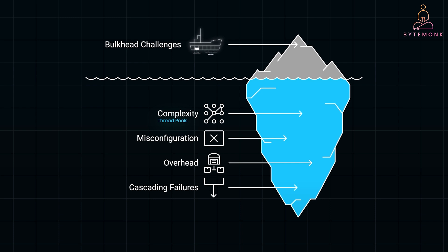If you misconfigure bulkheads — say by giving a non-critical service too many resources — you could end up with critical services underperforming. For example, accidentally over-allocating resources to your recommendation service while your payment service gets starved. Maintaining separate resource pools and thread limits introduces overhead, and bulkheads can result in resource underutilization if you're not careful. Finding the right balance between services can be tricky — too much isolation leads to inefficient use of resources, while too little can fail to prevent cascading failures.